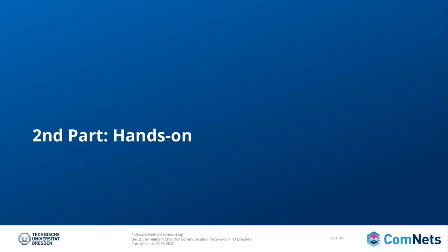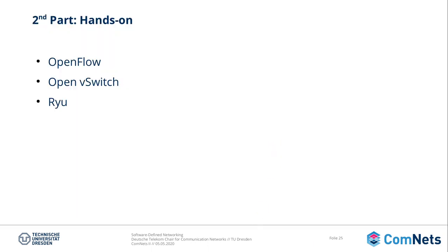Welcome to the second part of the SDN lecture. In this part we have a closer look at certain technologies and protocols, and in addition we have a hands-on where we program a software-defined network. First, I will explain in more detail the OpenFlow protocol, then OpenVSwitch and Rio — the southbound interface or protocol which we can use with the SDN controller to program the OpenVSwitch. So we have the SDN controller, SDN switch, and the configuration protocol, which is all we need to build our own SDN network.